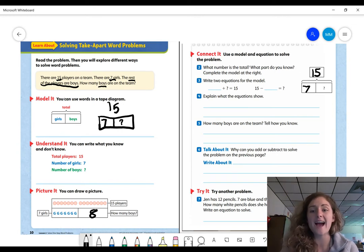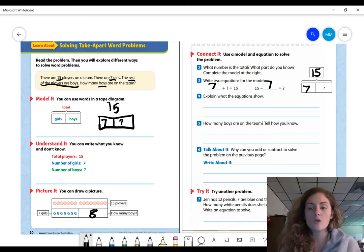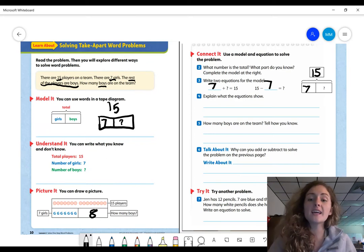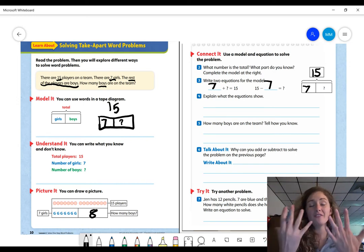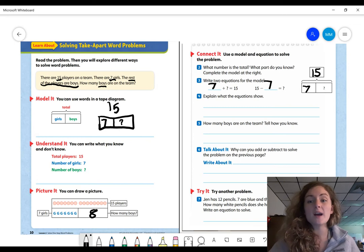Now it says to write two equations for the model. So when we have a model, we can do an adding sentence and a subtracting sentence. If I'm adding, I have two parts that make a whole. So what was the part that I knew? Seven. And what part would we take away if we were subtracting? Seven. And it says to explain what the equation shows. So the equation shows us that when we add, we can find the missing part to count on. So we can count on to find that missing part. But if we are subtracting, we don't have 15 fingers that we could take away. So this is why it's important, my friends, to know our fact families.